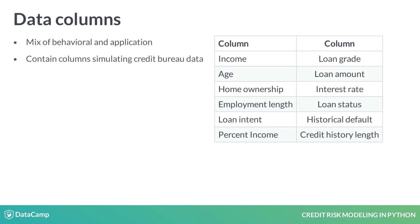The data we will use for our predictions of probability of default includes a mix. This is important because application data alone is not as good as application and behavioral data together. Included are two columns which emulate data that can be purchased from credit bureaus. Acquiring external data is a common practice in most organizations. These are the columns available in the data set. Some examples are personal income, the loan amount's percentage of the person's income, and credit history length.